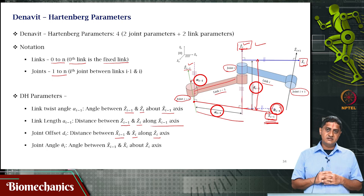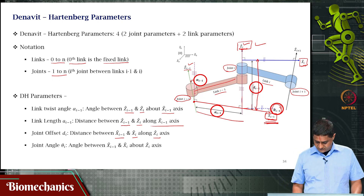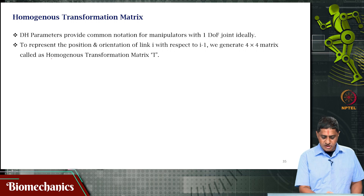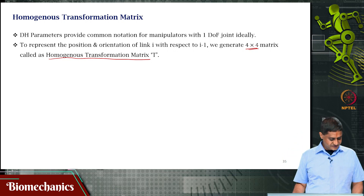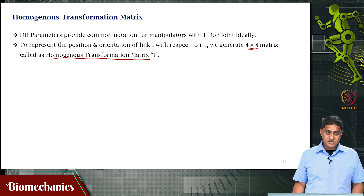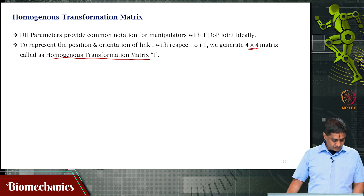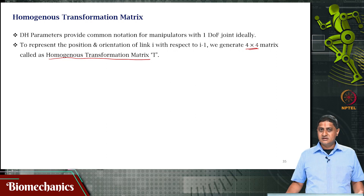You can use this DH table to find the forward kinematics equation and solve for them. To do this, we construct what is called a homogeneous transformation matrix T — a 4×4 matrix. This is found by multiplying four individual matrices: two rotation matrices corresponding to alpha(i−1) and theta(i), and two translations corresponding to a(i−1) and d(i). There are only four parameters — two angular parameters and two distance parameters.